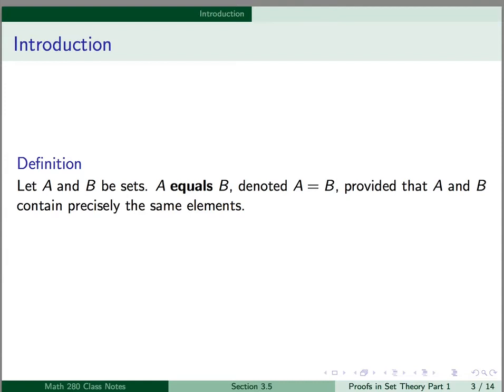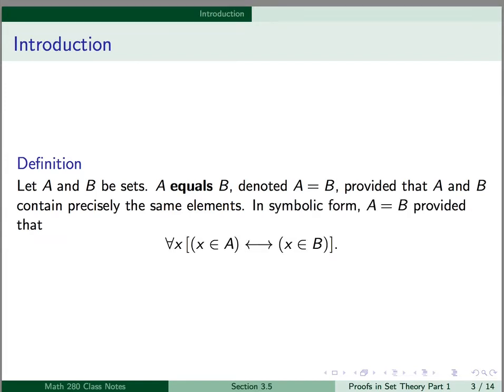If we let A and B be sets, then A equals B, denoted with the usual equals sign, provided that A and B contain precisely the same elements. In symbolic form, A equals B provided that for all x, x is an element of A if and only if x is an element of B.